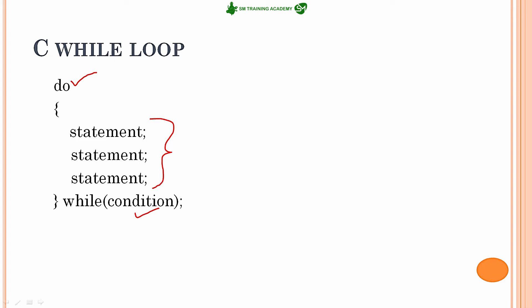After complete execution of the statements in the first instance, the condition is checked. If it is true, the statements are executed again. This continues until the condition becomes false. Since the condition is checked at the exit point, this loop is called an exit control loop.